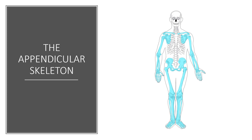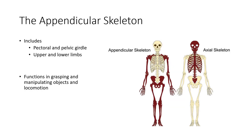This video is just a general overview of the appendicular skeleton. The appendicular skeleton includes your girdles and your limbs. These bones function in grasping and manipulating objects and of course locomotion.